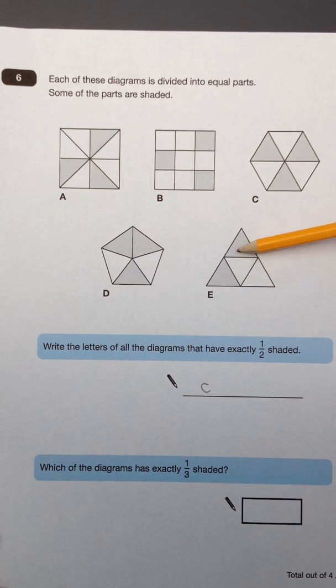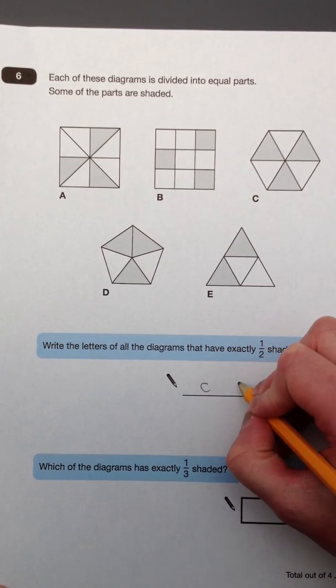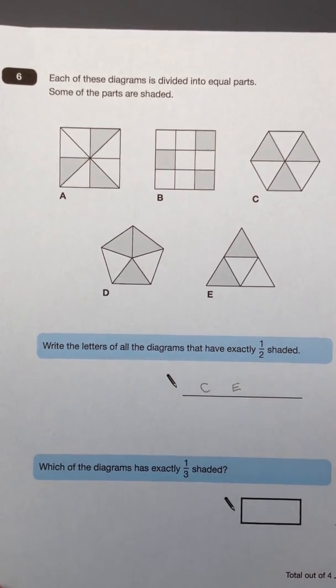E has been divided into 1, 2, 3, 4, and 2 of those 4 have been shaded, so E does have exactly half shaded.